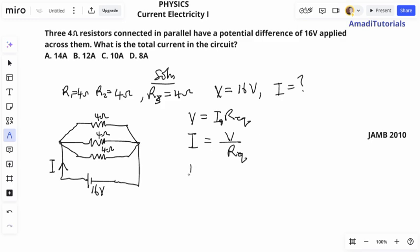The challenge here is to find the equivalent resistance. Since there are three resistors in parallel, one over R equivalent will be one over R1 plus one over R2 plus one over R3. That will be one over four plus one over four plus one over four,